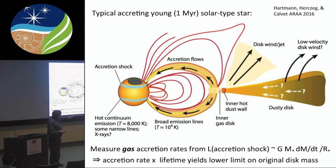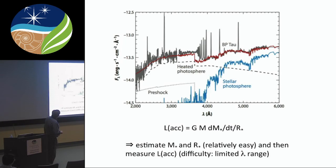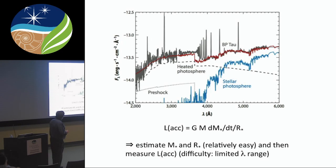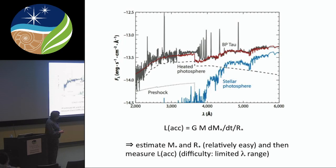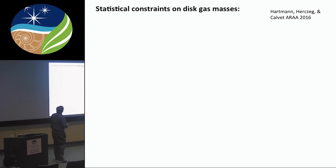Based on this argument, there has to be more mass than other methods suggest — by a factor of a few. Here is a typical UV-to-optical spectrum of an accreting star: the photospheric contribution and the excess above it. We measure that excess to get the accretion rate. There are uncertainties since we don't measure all wavelengths accurately, but if anything we're underestimating the accretion luminosity.